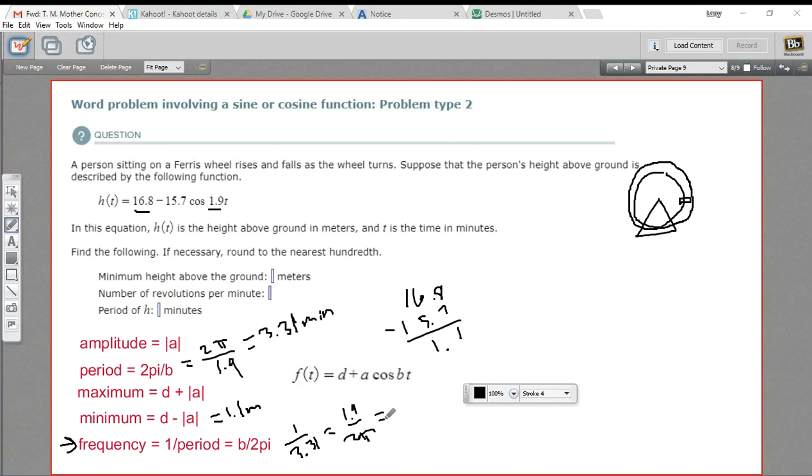I'm just going to hit my 1/x key on my calculator. And this is giving me 0.30 rounding to the nearest hundredth. And the frequency here is going to be our revolutions per minute.